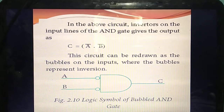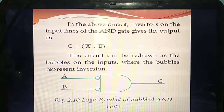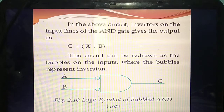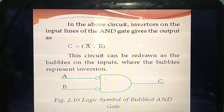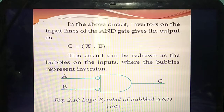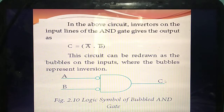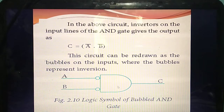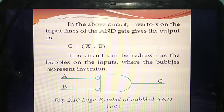This is the logical symbol for bubbled AND gate. Both input signals A and B: since bubbled, A is inverted to A bar and B is inverted to B bar, and the output is C equal to A bar dot B bar. Each and every logical symbol is very, very important. You should write the output as C equal to A bar dot B bar.